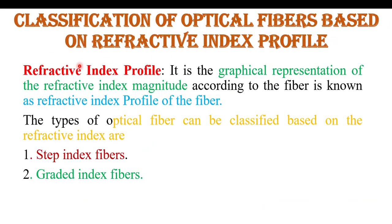Now, classification of optical fiber based on refractive index profile. Refractive index profile is the graphical representation of the refractive index magnitude of a particular fiber. There are basically two types of fibers according to their refractive index: step index fiber and graded index fiber. In this video, I will explain only the classification and a brief description of all types of fiber. In my coming videos, I will explain all types of fiber in detail.